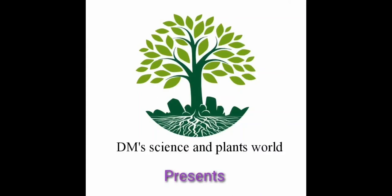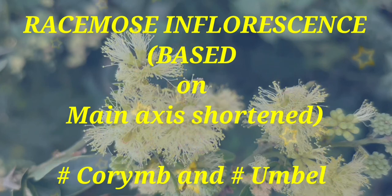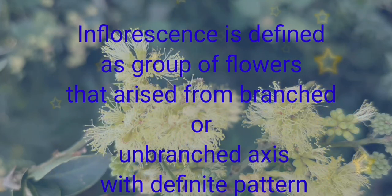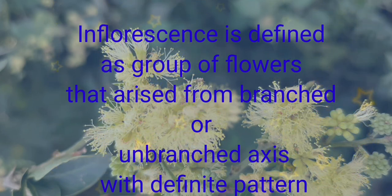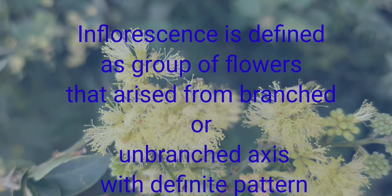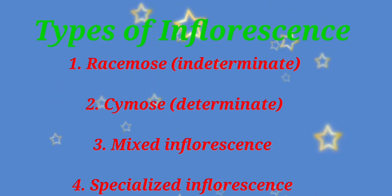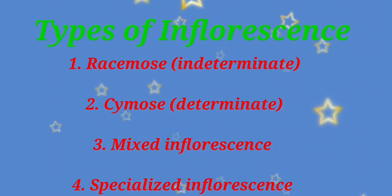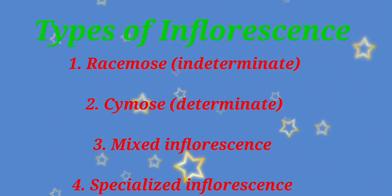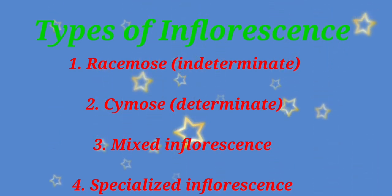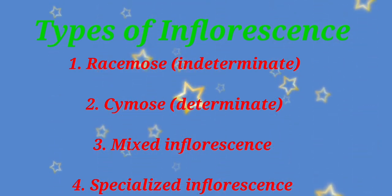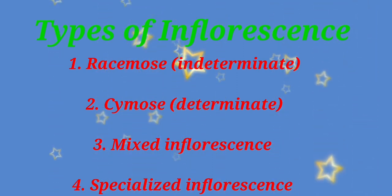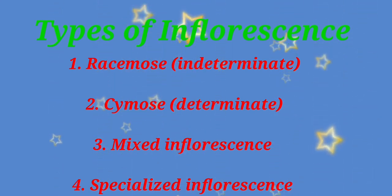DM Science and Plants World presents about the racimose inflorescence based on the main axis shortened. The inflorescence is defined as a group or bunch of flowers that arise or originate from a branched or unbranched axis with a definite pattern of arrangement. The inflorescence is classified into many types: the indeterminate, which is called racimose; the determinate, that is cymose; and mixed inflorescence, which is the combination of racimose and cymose inflorescence.